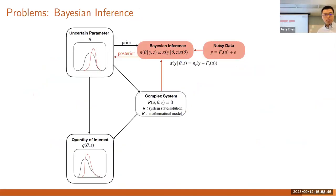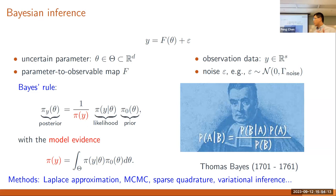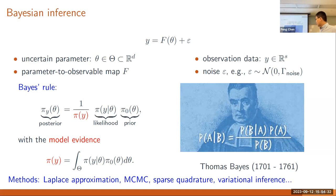For Bayesian inference, the general framework has data y, parameter theta, an observable map f, and additive Gaussian noise epsilon. Bayes' rule gives the posterior as likelihood times prior divided by the normalization constant. Various methods have been developed over the years including Laplace approximation, MCMC, sparse quadrature, and variational inference. More recently, we developed a projected Stein variational Newton and gradient descent method based on optimal transport, and a Gaussian Stein gradient descent method for high-dimensional Bayesian inference.